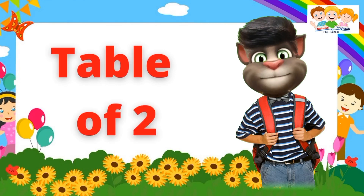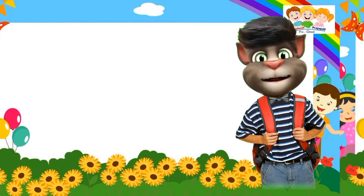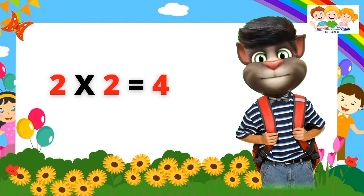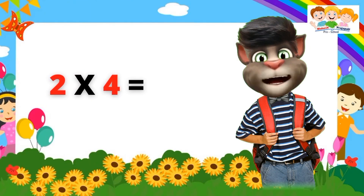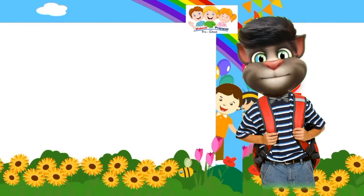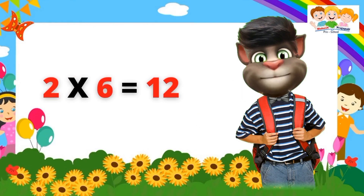Table of Two. Two one's are two. Two two's are four. Two three's are six. Two four's are eight. Two five's are ten. Two six's are twelve.